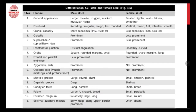Now let's start with sex determination using the skull. We need to know the basic differences between the male and female skull. Regarding general appearance, the male skull is larger, heavier, rugged, and has marked muscular ridges, whereas the female skull is small, light, with thin and smooth walls.